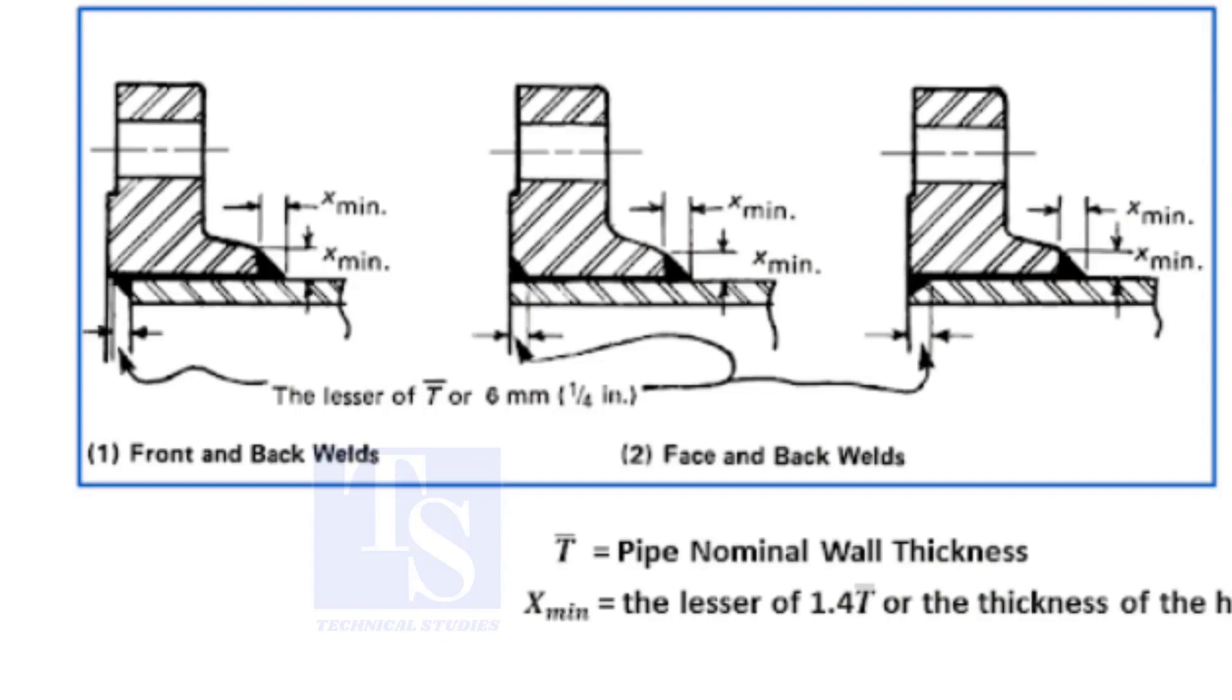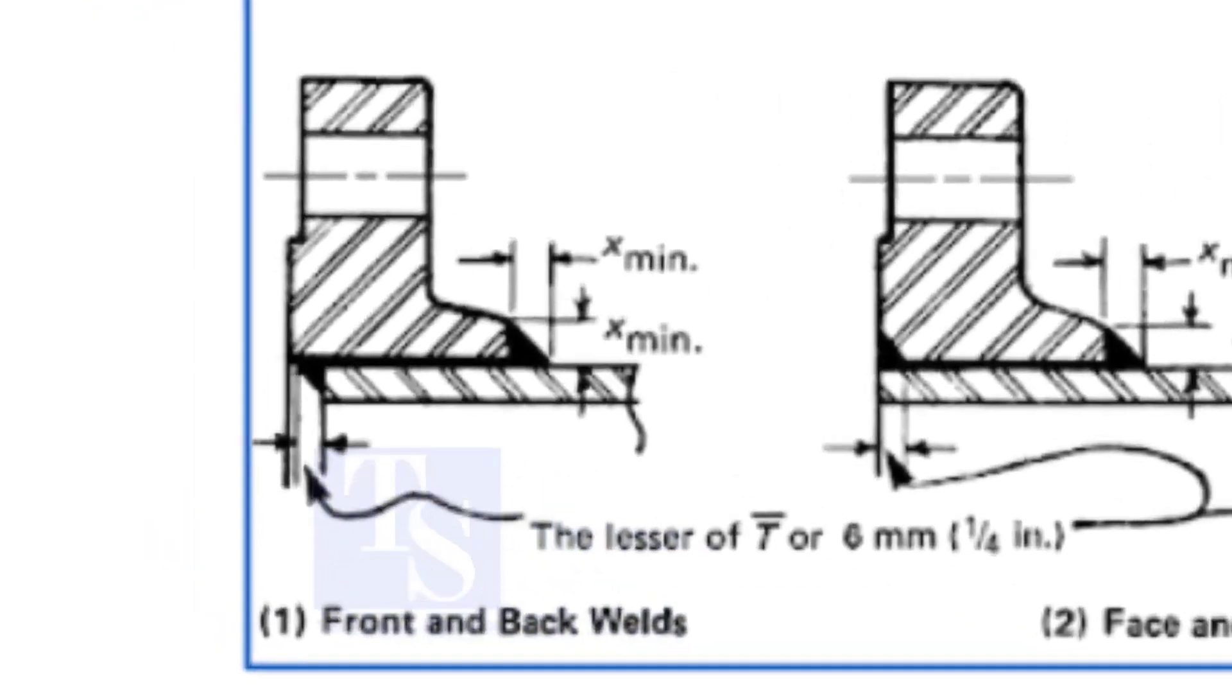As per the code, there are three different procedures for slip-on flange fit-up. In the first method, the flange is overlapping the pipe. The overlap shall be the thickness of the pipe or a minimum 6 mm.